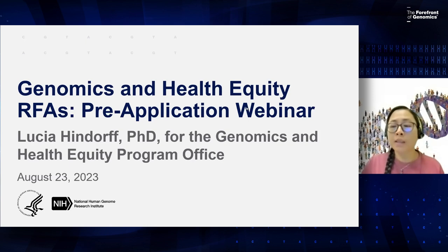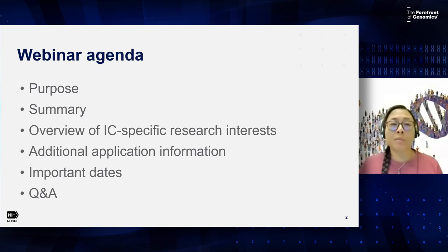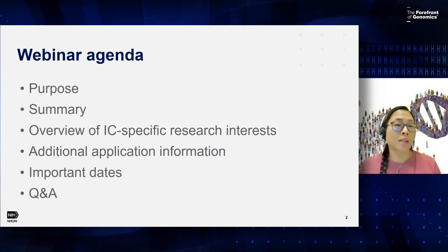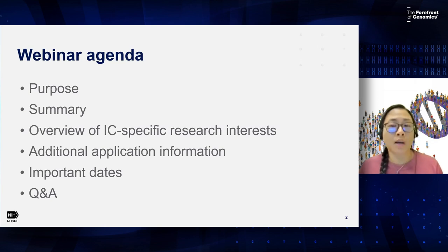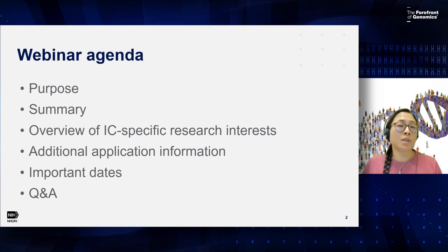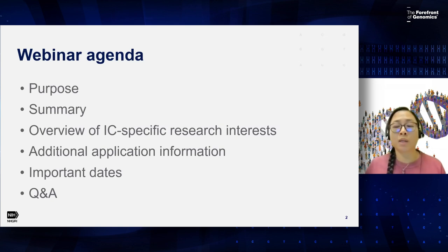Let me review our agenda for this webinar. I'll start by giving a purpose of the RFAs, as well as the summary of the funding opportunities — the two funding opportunities that are the focus of this webinar. Then I will present an overview of the IC-specific research interests of the participating collaborators, as well as summarizing additional application information and important dates. My other ICO colleagues will join me for the Q&A if there are specific questions that they should be addressing.